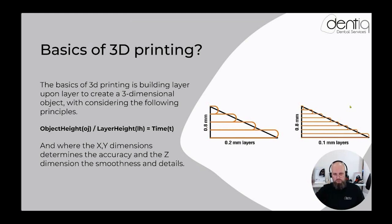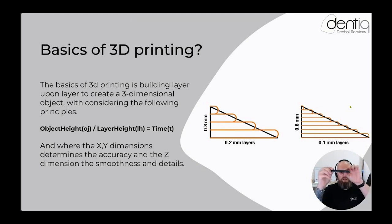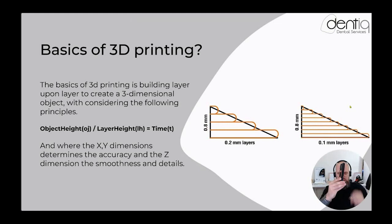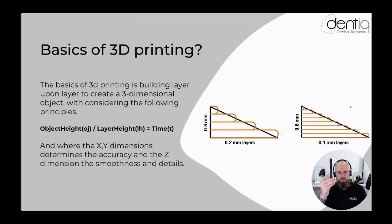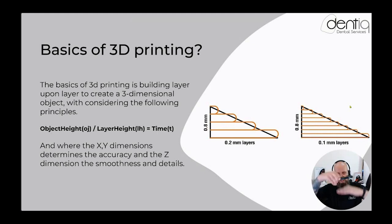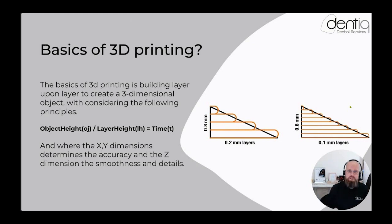Orientation also matters: if I hold my phone flat, the object height is small and I need fewer layers — perhaps 10 minutes. If I orient it vertically, the height increases and I might need 30–40 minutes. However, standing objects vertically frees up platform space to place multiple objects side by side, which compensates for the longer time. So orientation significantly determines both print time and how many objects fit on the platform.